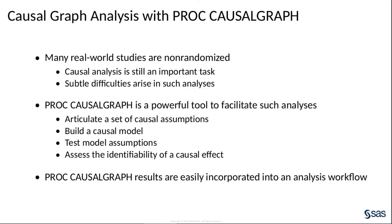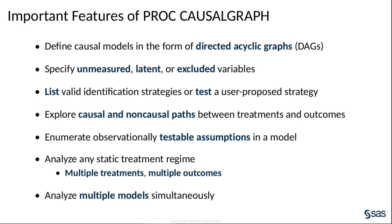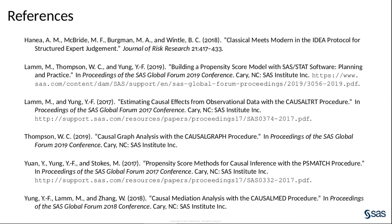In summary, there are many practical applications that require causal analysis of data from non-randomized experiments. Causal graphs are a powerful tool to handle many of the subtle difficulties that arise from the lack of randomization. The causal graph procedure is designed to help you use DAGs by providing a convenient combination of grammar and options to articulate model assumptions and assess the identifiability of a causal effect. The results from PROC Causal Graph are easily incorporated into other statistical analysis procedures. PROC Causal Graph also includes the capability to enumerate paths in a causal model, enumerate statistically testable assumptions, accommodate multiple treatment variables, multiple outcome variables, and even multiple causal models simultaneously. Here is a selection of references where you can find more information about the technical details of the causal graph procedure.